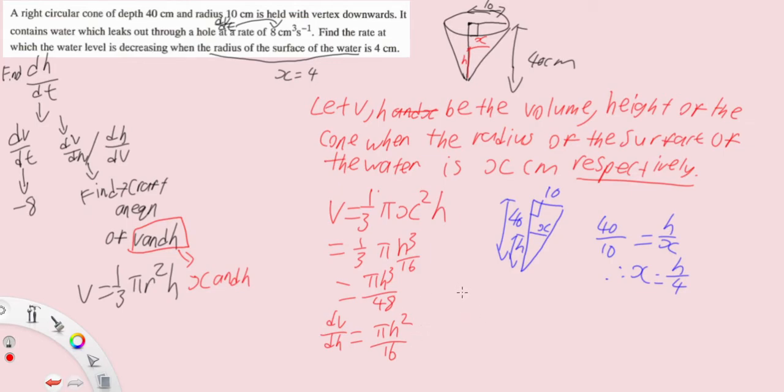Okay so we want to find the rate of the water level at x equals 4, where the radius of the surface of the water equals 4. So when x equals 4, h equals 16. So when x equals 4, h equals 16, dv/dh equals to 16 pi, correct.